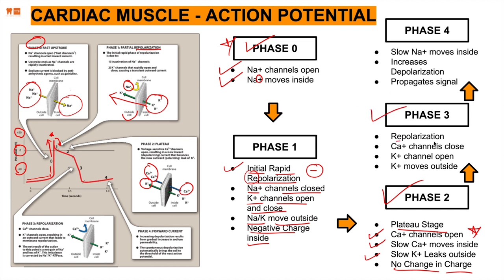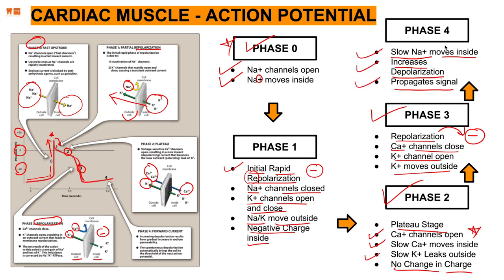Phase three is repolarization: calcium channels close, potassium channels open and potassium moves out, causing a negative charge inside the cell — repolarization. The negative charge builds inside. So to recap: phase zero spikes up, phase one brings it down, phase two is a plateau with minimal activity, then phase three brings it down via repolarization. Phase four involves a slow sodium movement back inside that increases depolarization and propagates the signal, cycling back to initiate the next action potential. This is how cardiac muscles create action potential.